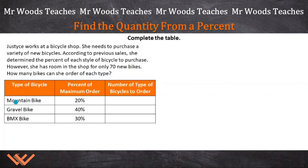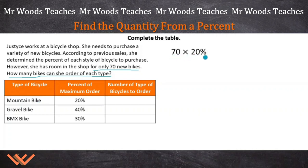We're looking at for a mountain bike, she wants to order 20%. How would you set that up? Well, let's look up here. She says she only has room for 70 new bikes. We're going to need to find out how many bikes she can order of each type. To set this up, you're going to have 70 times 20%, because that's going to give you the number of bikes out of that 70 that should be mountain bikes. So we have 70 times 20%.